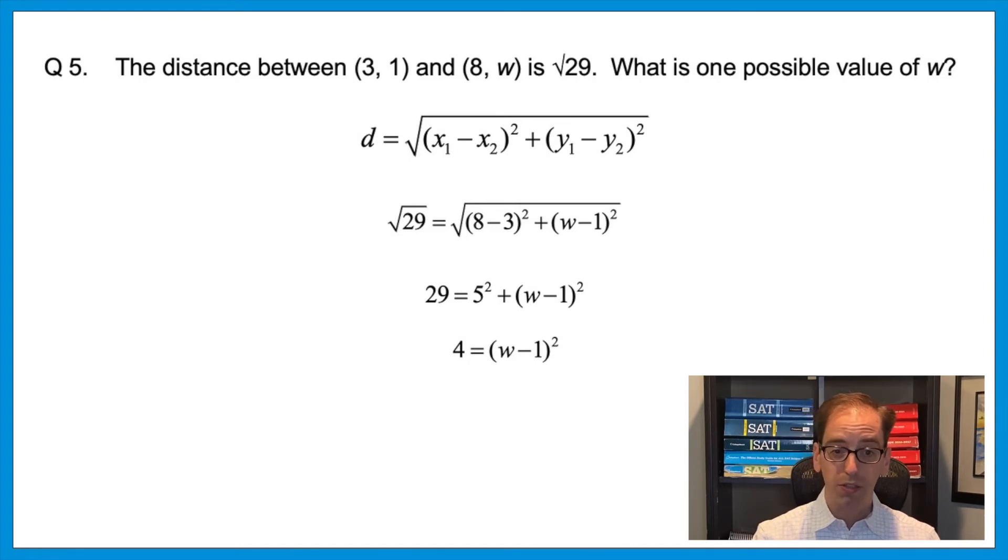Now you could multiply that out through FOIL, or it's easier to just take the square root of both sides. But remember, it would have to equal both 2 and negative 2. So positive negative 2 would give us w minus 1. And then you could set up two equations to solve for both. w minus 1 is 2, and w minus 1 is negative 2. And solving each would give you 3 and negative 1. The answer is 3 and negative 1.